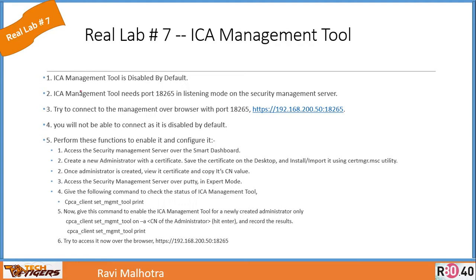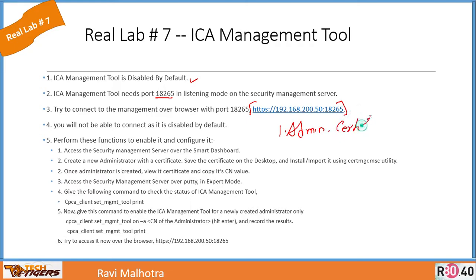The ICA management tool is disabled by default and uses port number 18265 in listening mode on the security management server. You can try to connect to the management server via browser on port 18265, but you will not be able to connect since it's disabled by default. To enable and configure it, we'll follow a series of steps.